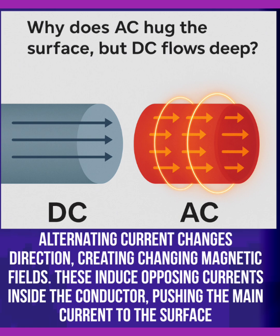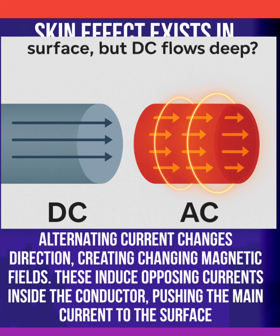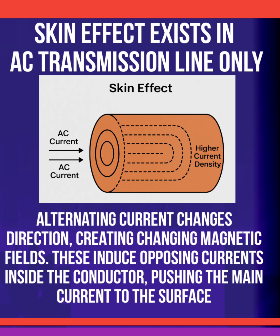AC changes its direction, creating a changing magnetic field. It induces an opposing current inside the conductor, pushing the main current to the surface. By this we can conclude that the skin effect exists in AC transmission lines only, because it creates a changing magnetic field.